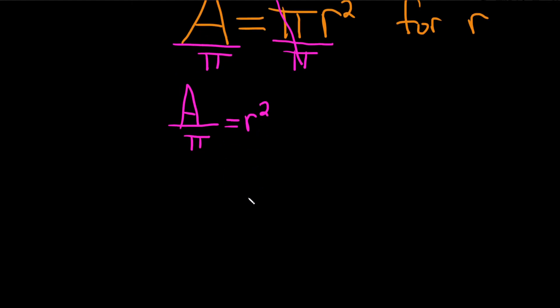I'm going to write r squared on the left-hand side. So let's write it as r squared equals A over pi.